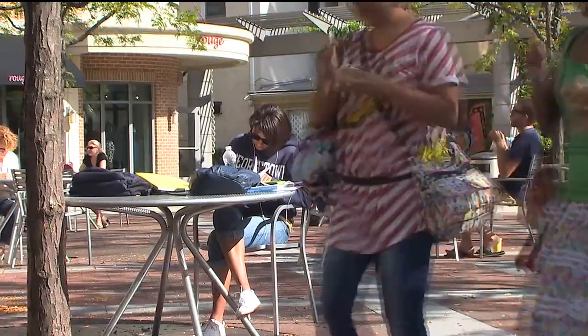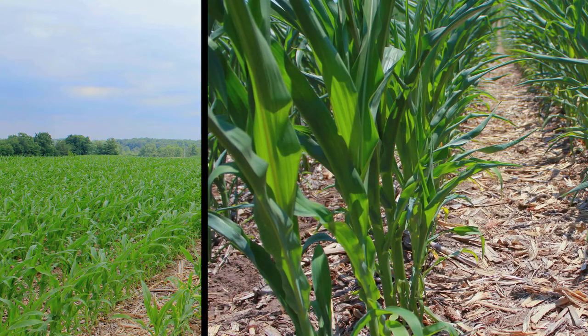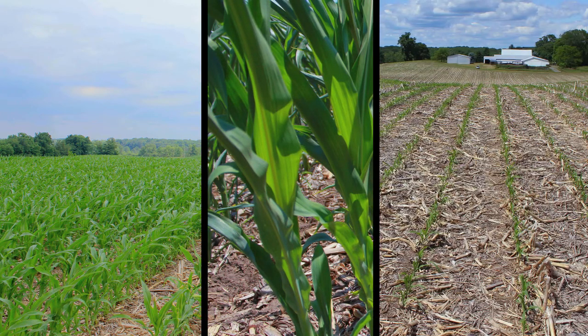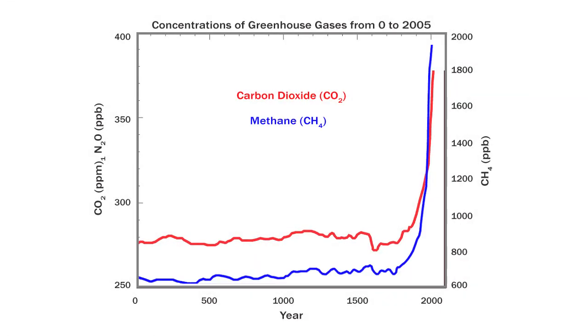There are more people on earth every day and they all need to be fed. This means we have to increase the amount of agricultural production on the planet, but it also means that we have to increase the nitrogen fertilizers that are being used. This is leading to much larger emissions of gases such as nitrous oxide into the atmosphere.